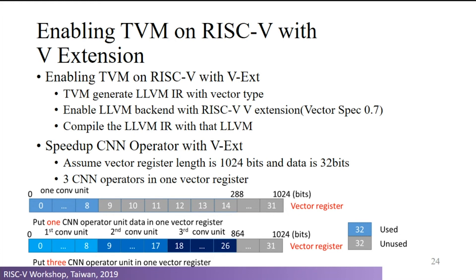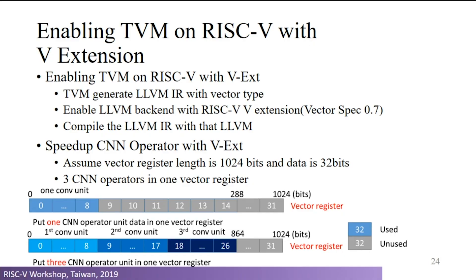Besides the P extension, we are also working on the V extension, which is ongoing work. We are trying to make TVM generate the correct vector types and also enabling the LLVM compiler with V extension instructions, currently based on the vector spec 0.7. What we're trying to do is put three depth-wise convolution operators into a single intrinsic, since using a single intrinsic can fill most of the vector register.